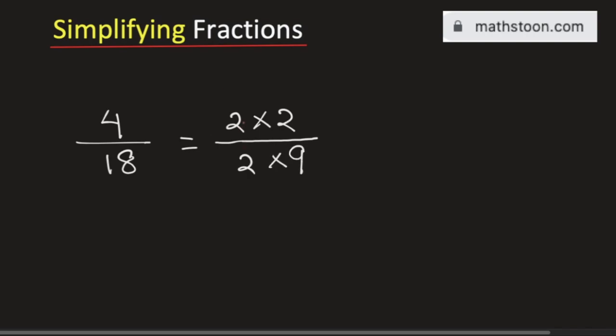Observe that 2 is present in both the numerator and the denominator. So we can cancel it out. Therefore, we are left with 2 divided by 9.